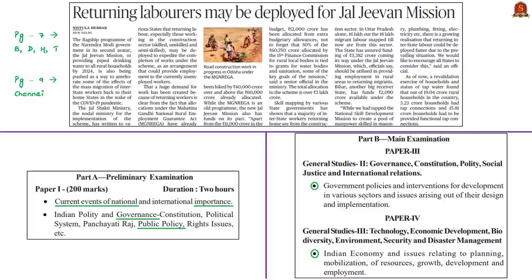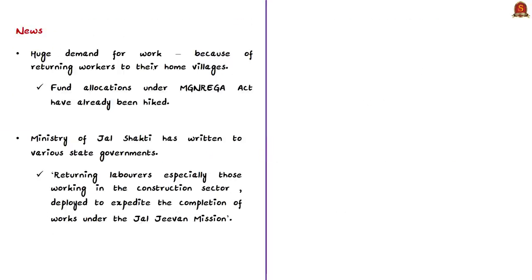In a bid to kickstart the economy and fight against poverty and hunger, the government has been relaxing lockdown in a phased manner. The lockdown of about 80 days left migrant labourers stranded and vulnerable. Because of lockdown relaxation, millions of migrant workers began to return to their home villages. Most of these migrant workers used to work in the construction sector, and because of reverse migration a huge demand for work has been noticed in rural areas. The government has already increased fund allocations under Mahatma Gandhi National Rural Employment Guarantee Program to provide at least 100 days of unskilled manual work, but there is still a huge gap in providing employment opportunities to returned migrants.